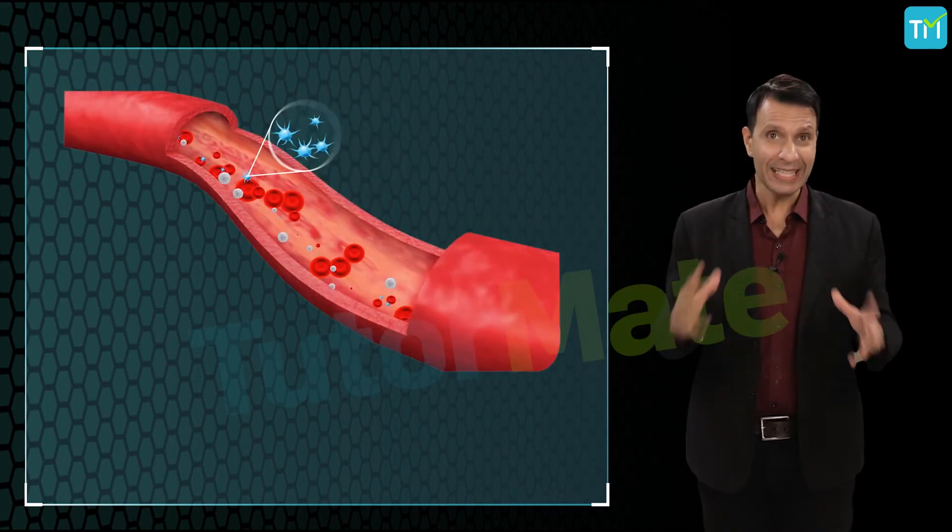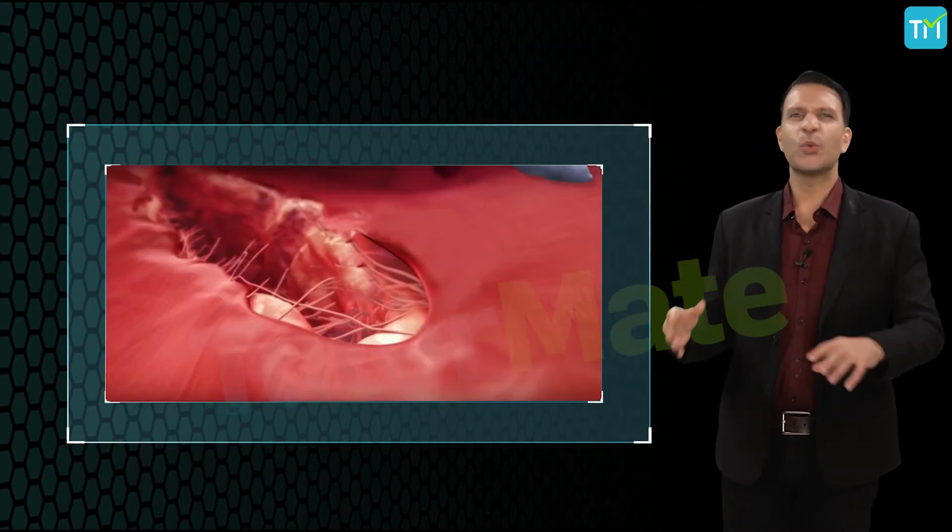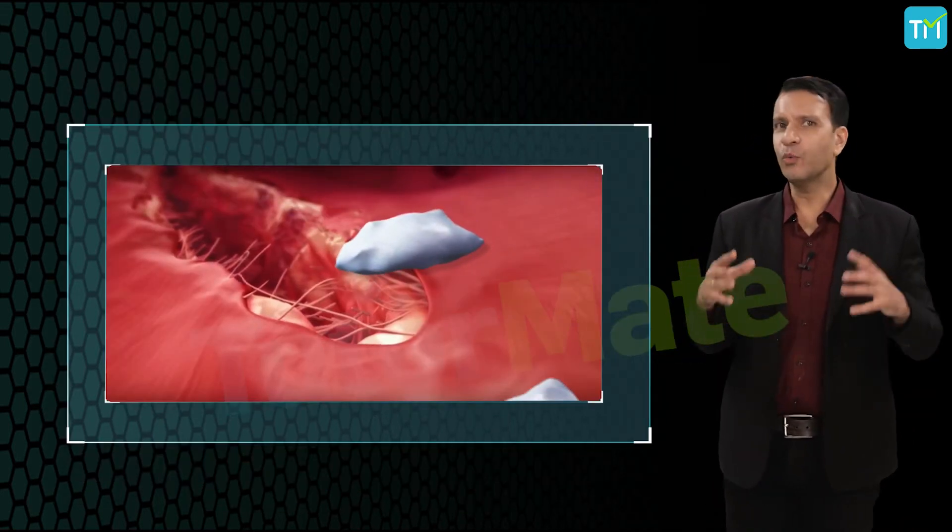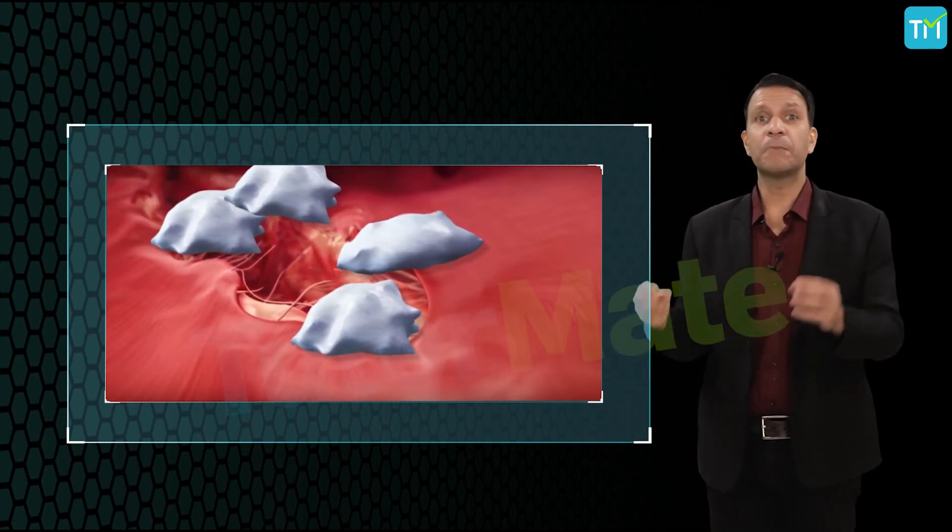Now platelets help in the coagulation of blood in a wound or a cut. So when you get a cut or a wound, it immediately starts bleeding, isn't it? Now the platelets help clot the blood, due to which further bleeding stops.